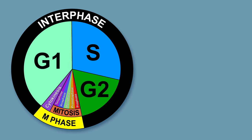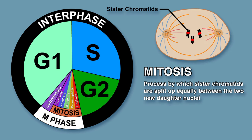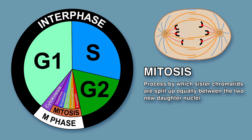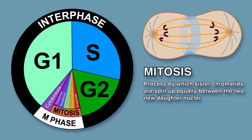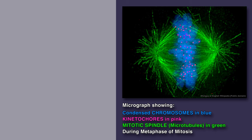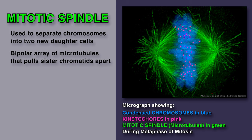Finally, we come to M phase, which includes mitosis and cytokinesis. Mitosis is the process by which sister chromatids are split up equally between the two new daughter nuclei, so that each new cell can have an identical and complete version of the genome. Cytokinesis is the division of the cytoplasm. Before describing what happens during mitosis, it is important to define the mitotic spindle and centrosomes. The mitotic spindle is what eukaryotes use to separate chromosomes into two new daughter cells.